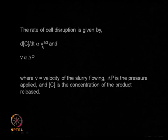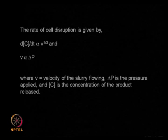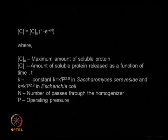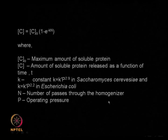The rate of cell disruption dC/dt is proportional to v^(1/3) where v is the velocity of slurry flow, and ΔP is the pressure applied. This simplifies to C = C₀(1 − e^(−kn)), where C is the amount of protein released, C₀ is the maximum amount present, and n is the number of passes through the homogenizer. For saccharomyces, k = k′P^2.9, and for E. coli, k = k′P^2.2 — the exponent varies depending on the microorganism.